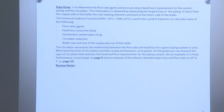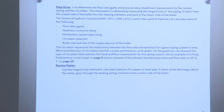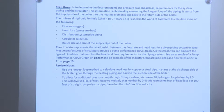The circulator represents the relationship between flow rate and head loss for a given piping system or zone. Most circulator manufacturers provide a pump performance curve graph. On the graph, you can pinpoint the type of circulator that matches the head and flow requirements for the piping system. Using the longest loop method to calculate head loss for copper or steel pipe, it starts at the discharge side of the boiler, goes through the heating piping, and back to the suction side of the boiler. To allow for additional pressure drop through fittings, valves, etc., we multiply the longest loop in feet by 1.5.